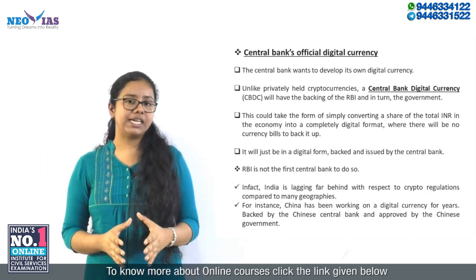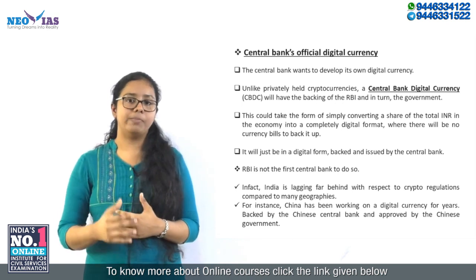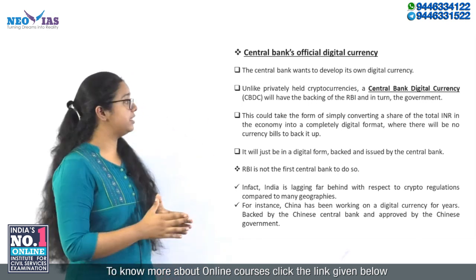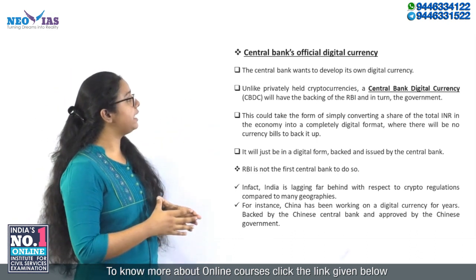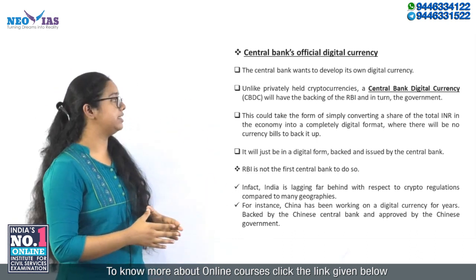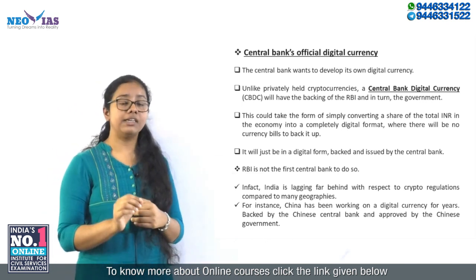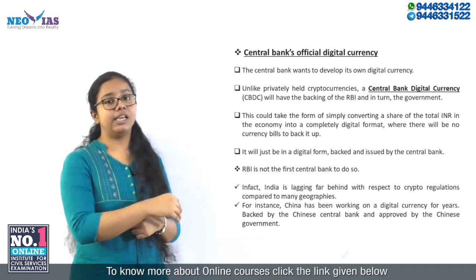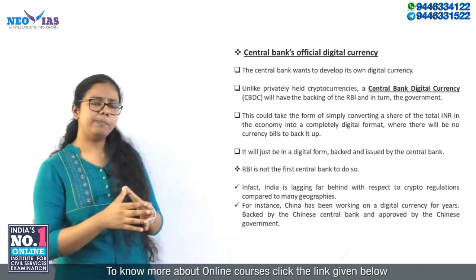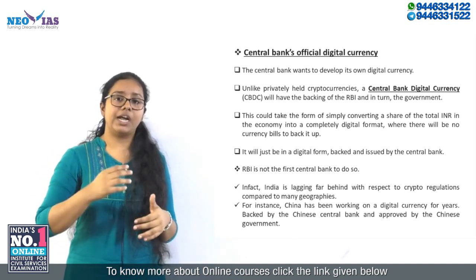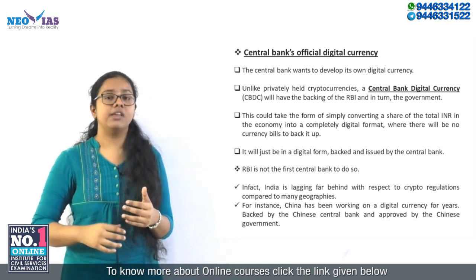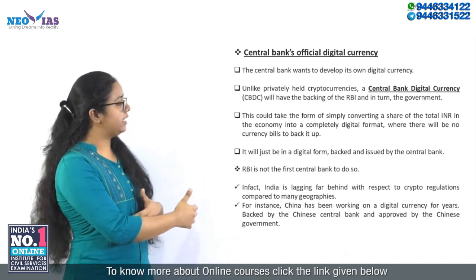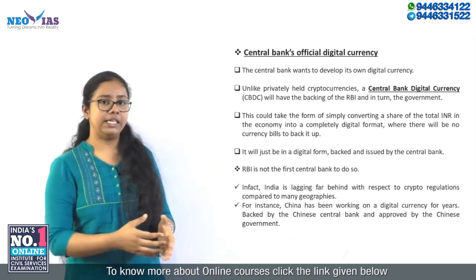The central government is planning to ban private cryptocurrencies like Bitcoin and in turn is trying to bring a central bank digital currency. Unlike private cryptocurrencies, the central bank's digital currency will have the backing of the Reserve Bank of India and in turn the backing of the government. So it is a centralized one. This could simply mean that the RBI would convert a share of Indian rupees in the economy into digital format, and it will be in digital form backed and issued by the central bank.